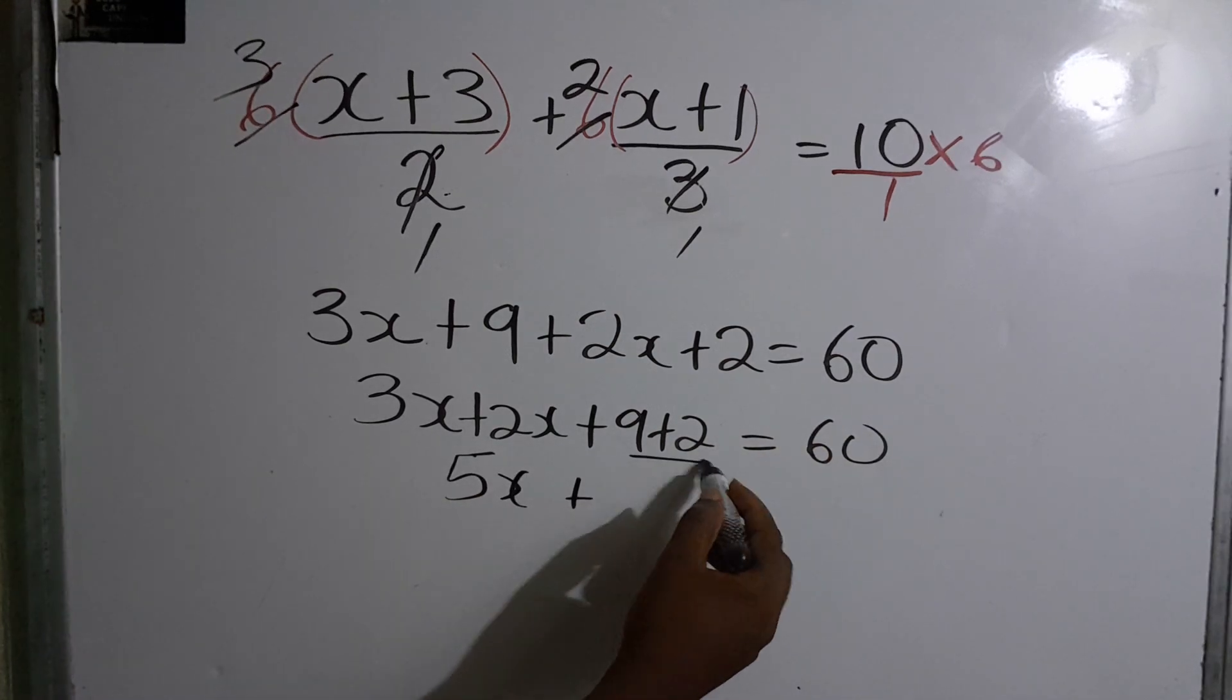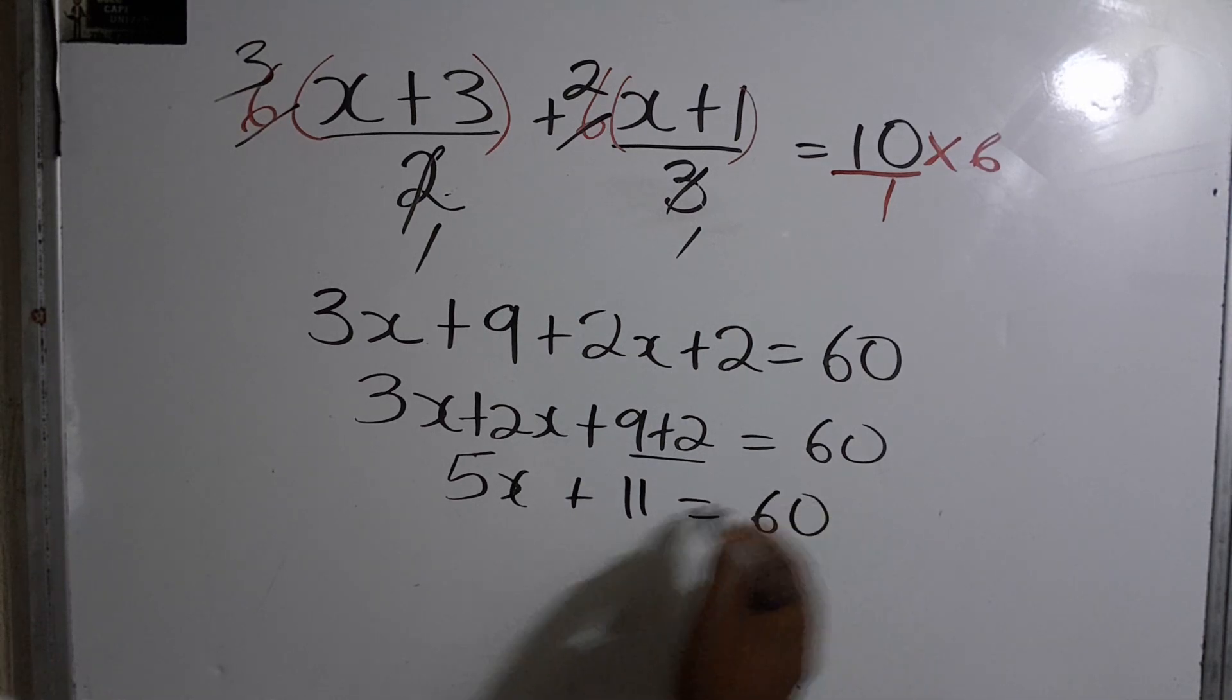Let's tidy up. This will give us 5x, 9 and 2 that's 11, and that's equal to 60.